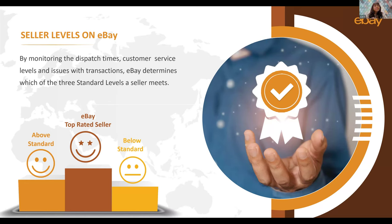Top-rated seller means you are exceeding the set standards and creating exceptional experiences for your buyers. Above standard means you are meeting the minimum standards that have been set and have the potential to reach top-rated seller level. Below standard means you are falling below the minimum set standards and really need to make changes to improve the service you provide.